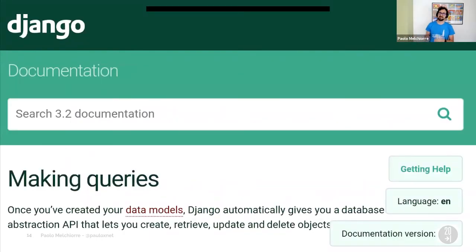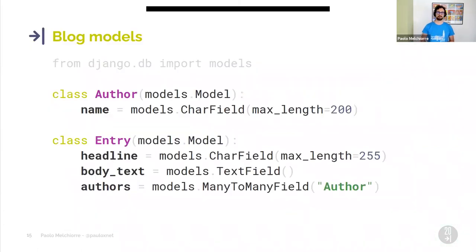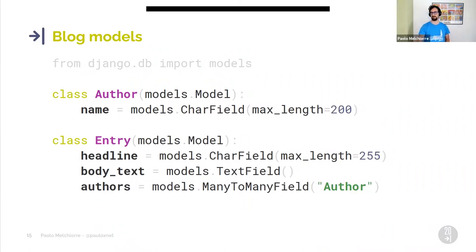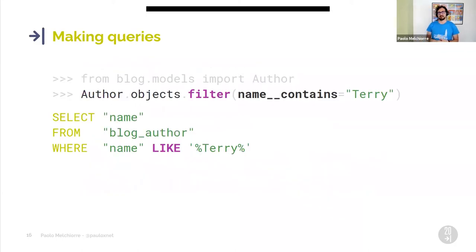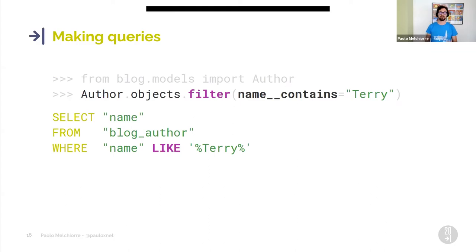Let's now see our database in action. We'll use the example model defined in the Making Queries section of the Django documentation. For our test queries, we'll only use an Author model and an Entry model, containing various types of fields we can search on. We can perform basic queries on our models, but these can be run using all other supported databases as well. What we're really interested in is using Postgres-specific features from Django.